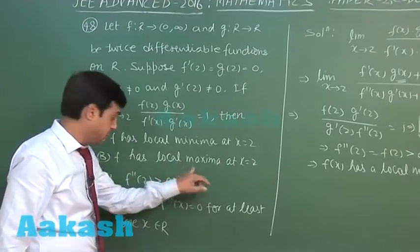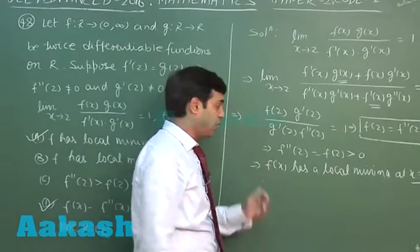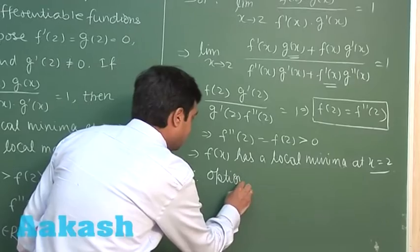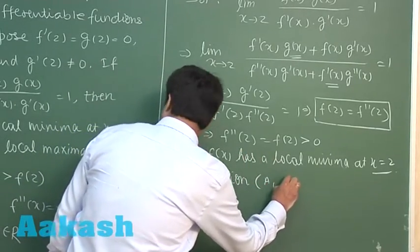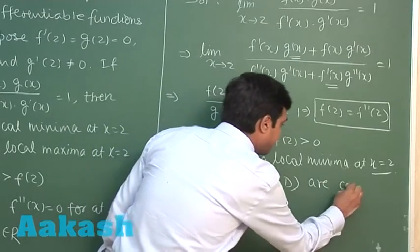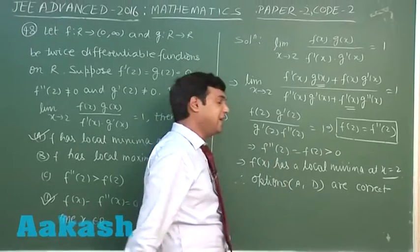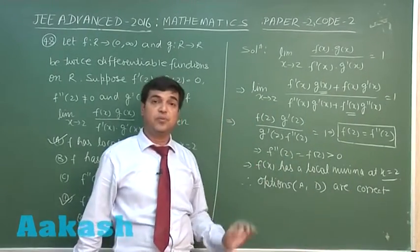B is not, f double dash 2 greater than f(2), this is already false because these two are equal. So here we can conclude that options from the given one, A and D are correct. So options A and D both are correct. So this is clear. Let us go for the next one.